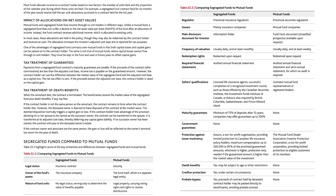Regulator: for segregated funds, provincial insurance regulators; for mutual funds, provincial securities regulators. Issuers: for segregated funds, mainly insurance companies; for mutual funds, mutual fund companies. Main disclosure document: for segregated funds, an information folder; for mutual funds, a fund facts document or simplified prospectus available upon request. Frequency of valuation: for segregated funds, usually daily and at least monthly; for mutual funds, usually daily and at least weekly. Redemption rights: both are redeemed upon request.